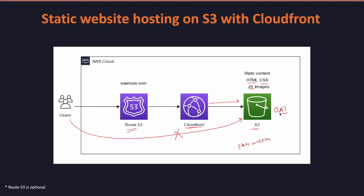I'll mention the relevant links in the description box for your future reference. The final flow would look like: the user will point to Route 53, then CloudFront, and then the S3 bucket.